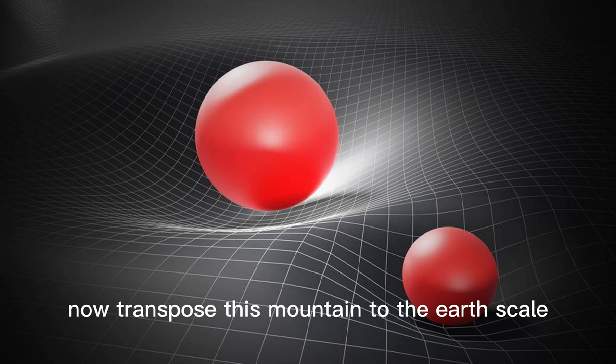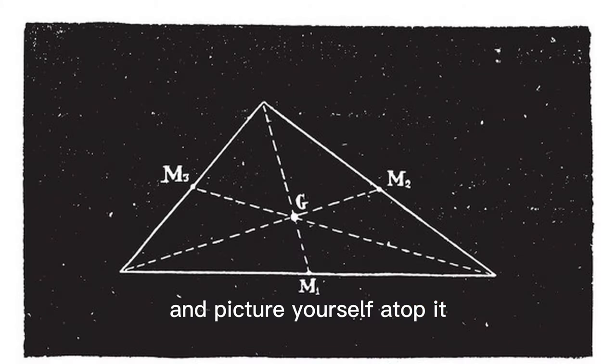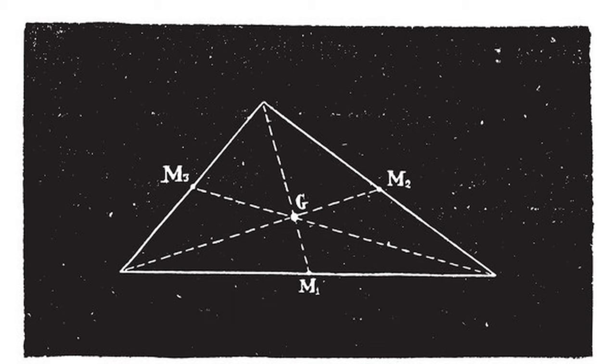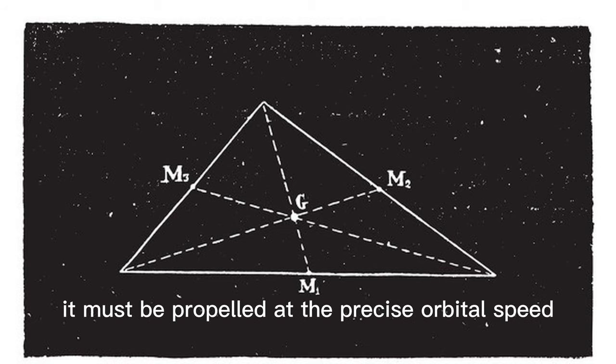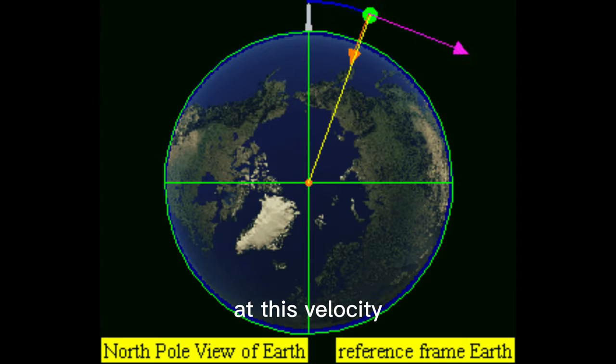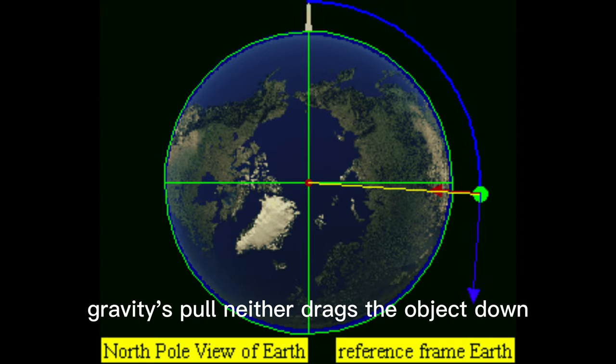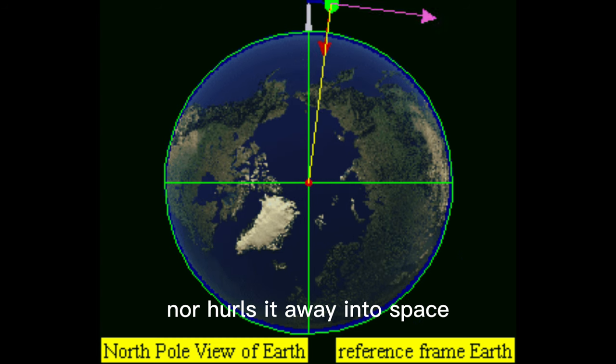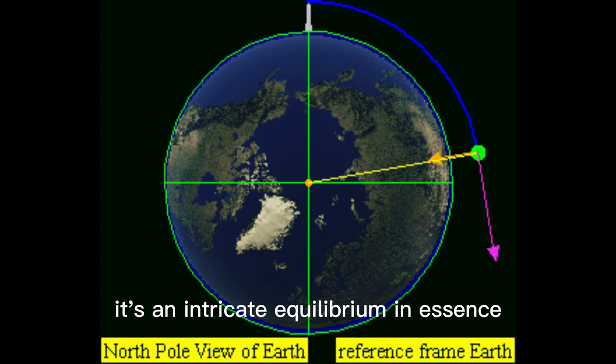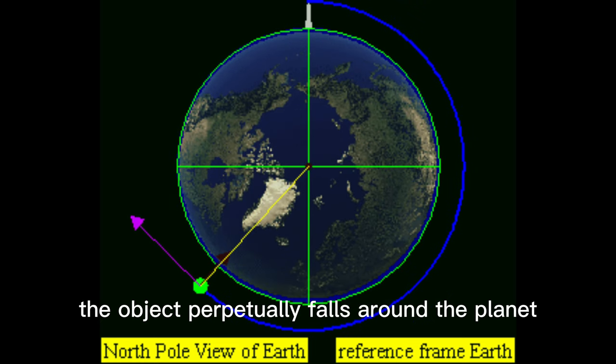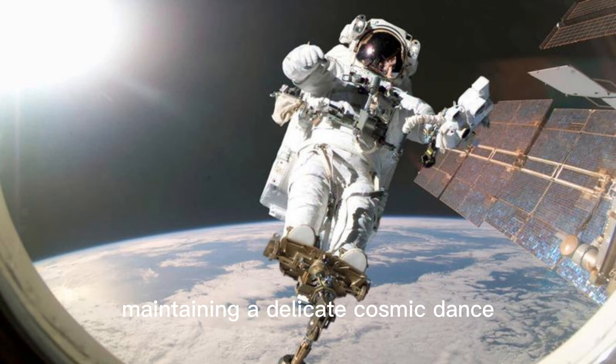Now transpose this mountain to the Earth's scale and picture yourself atop it, equipped with projectiles. For an object to gracefully orbit, it must be propelled at the precise orbital speed. At this velocity, gravity's pull neither drags the object down nor hurls it away into space. It's an intricate equilibrium. In essence, the object perpetually falls around the planet, maintaining a delicate cosmic dance.